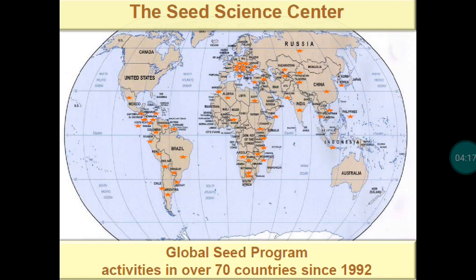Europe and North American countries are particularly concentrating on seed production and exporting that material. However, if you are aiming to export your material to another country, that material must be certified by international organizations. In India we have a seed certification system with Indian Minimum Seed Certification Standards (IMSCS), but material certified under IMSCS can only be distributed within our country. For export, the material must also fulfill the requirements of the importing country.